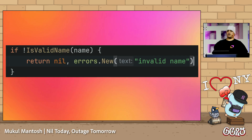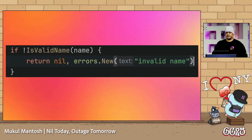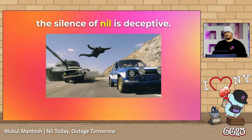So what's the moral of this story? In Go, the silence of nil is deceptive. It doesn't scream. It waits.